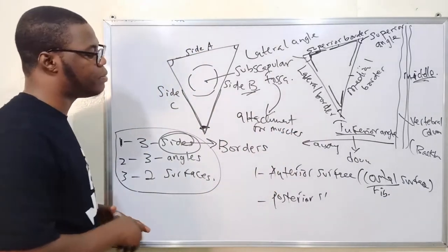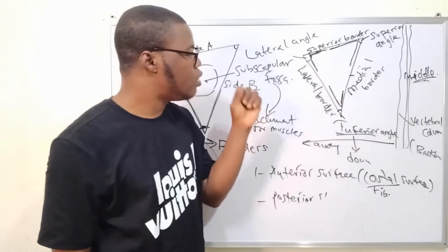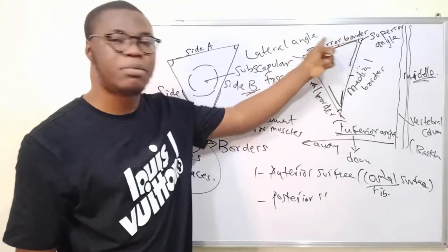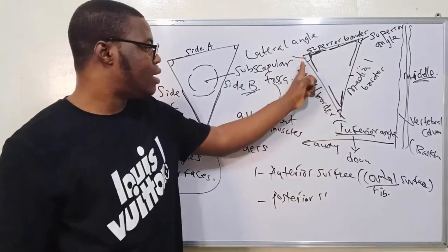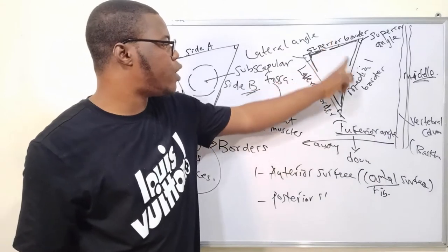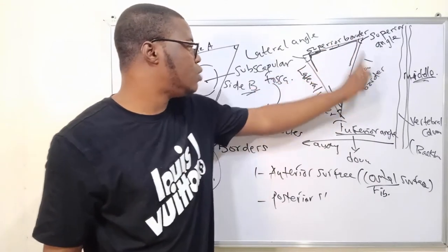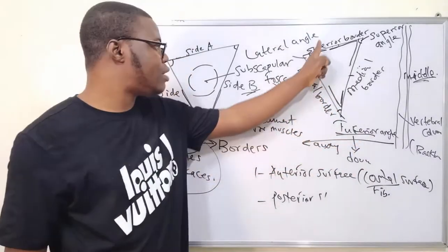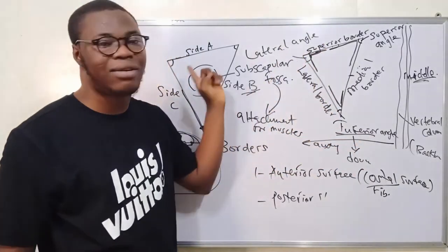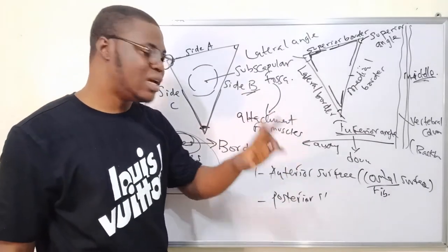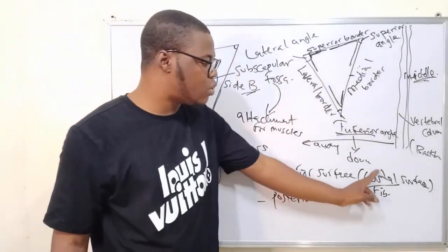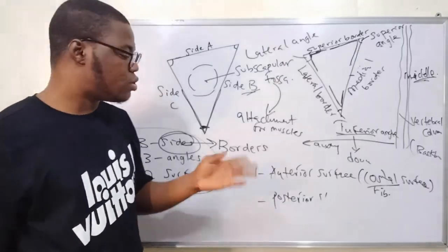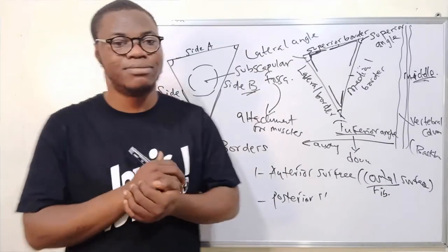Quick recap: the scapula has three borders — the superior border at the uppermost end, then the medial border, and the lateral border. The superior and medial borders are connected by the superior angle. The medial border and lateral border are connected by the inferior angle. The lateral border and superior border are connected by the lateral angle. The anterior surface is also called the costal surface because it faces the ribs and intercostal structures.